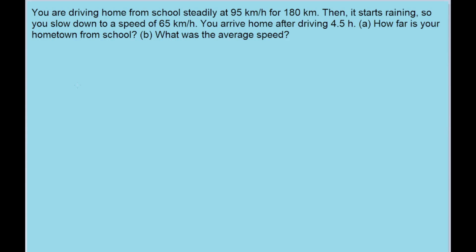In this problem we're driving from point A to point B and we start out going at a speed of 95 kilometers per hour, and then after a time we slow down to a speed of 65 kilometers per hour. The problem tells us that we're going 95 for 180 kilometers, but the problem does not tell us how far we travel when we're going 65. But it does tell us that our total time, t total, is 4.5 hours.